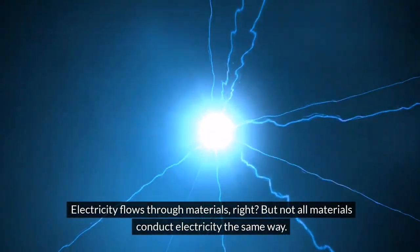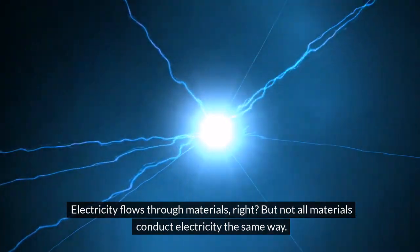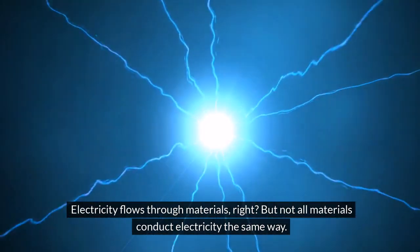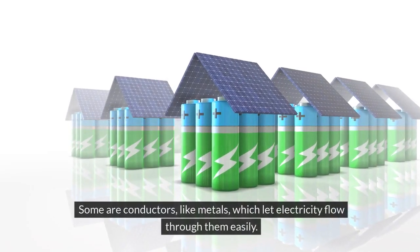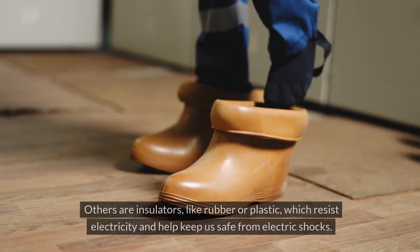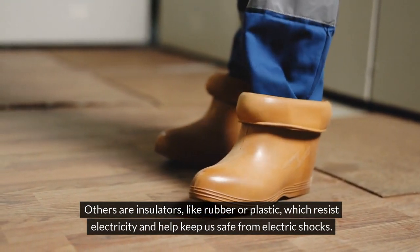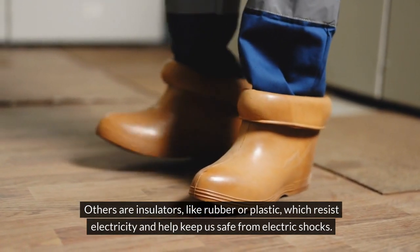Electricity flows through materials, right? But not all materials conduct electricity the same way. Some are conductors, like metals, which let electricity flow through them easily. Others are insulators, like rubber or plastic, which resist electricity and help keep us safe from electric shocks.